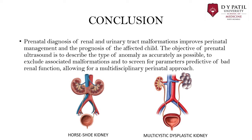In conclusion, prenatal diagnosis of renal and urinary tract malformations improves perinatal management and the prognosis of the affected child. The objectives of prenatal USG are to describe the type of anomaly as accurately as possible, to exclude associated malformations, and to screen for parameters predictive of poor renal function, allowing for a multidisciplinary perinatal approach.